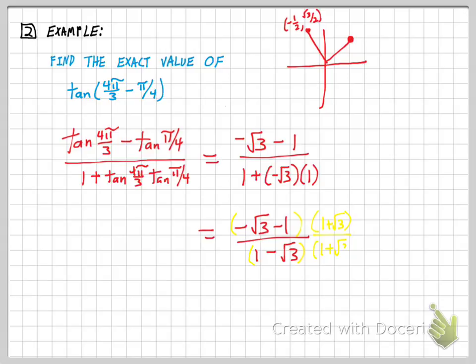Good review, actually, of rationalizing the denominator. So when I do that, on top, I'm going to have to FOIL. So I'm going to have negative root 3 minus 1 minus root 3 times root 3, which is 3, and then minus root 3, and then all of that is going to be over. When I FOIL on the bottom, I'm going to get 1 minus root 3 plus root 3, and then minus root 3 times root 3, which is 3.